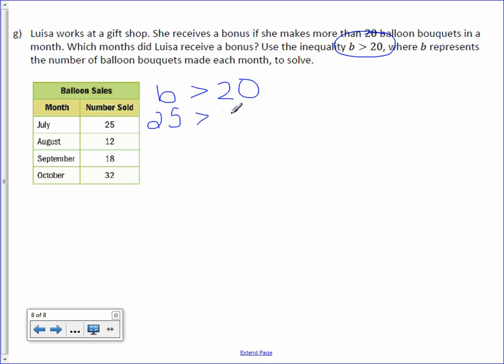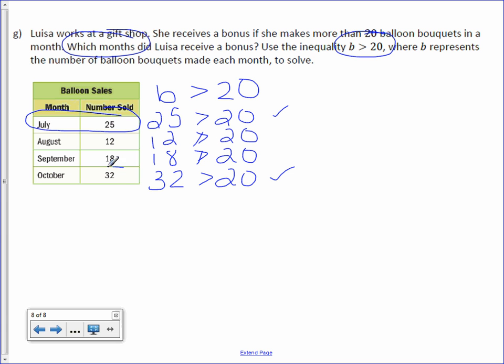Is 25 greater than 20? Yes, it is. Is 12 greater than 20? No, it's not. Is 18 greater than 20? No, it's not. Is 32 greater than 20? Yes, it is. So the question doesn't want the numbers. It asks which months. So this was a correct answer, and this was a correct answer. So my final answer is July and October.